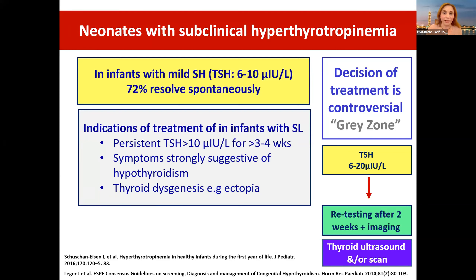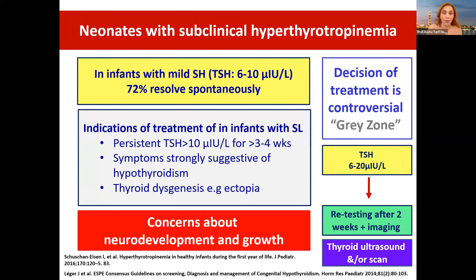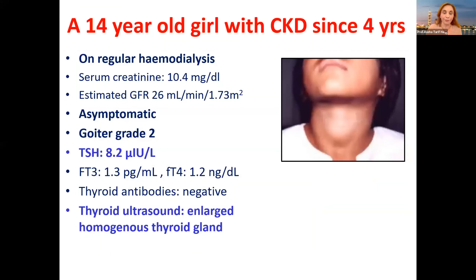Here I'd like to stress that we have concerns about neurodevelopment and growth — the situation is really critical in neonates. Finally, let me show you this 14-year-old girl with chronic kidney disease since age four, on regular hemodialysis, who came with goiter grade 2 and is asymptomatic.